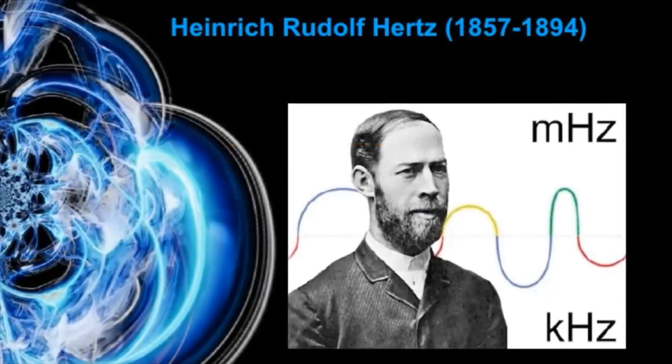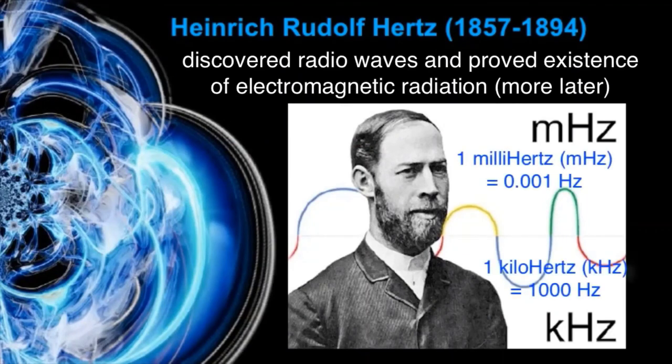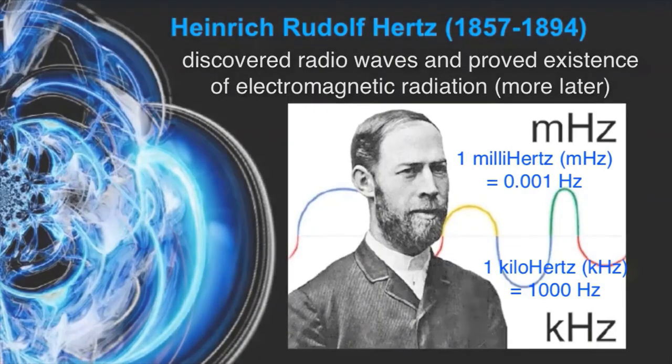Hertz was a German physicist who made important discoveries about electromagnetic radiation. Electromagnetic radiation is described with the same characteristics of a wave, wavelength and frequency. But radiation is also very different from these water waves. More on that later.